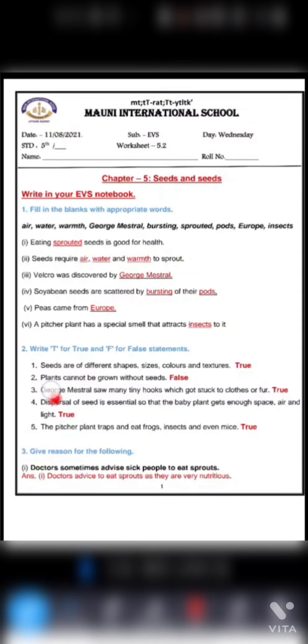Second, plants cannot be grown without seeds. Plants can't be grown without seeds. So no, this one is false. Plants can be grown without seeds. Plants can be grown without seeds also.